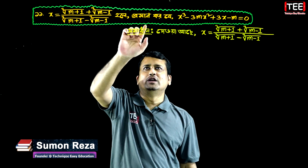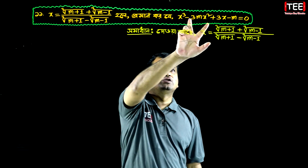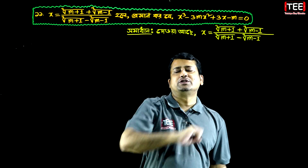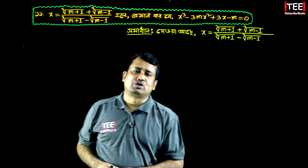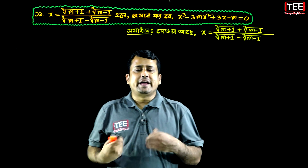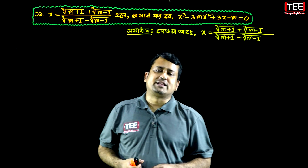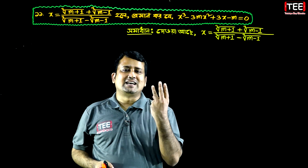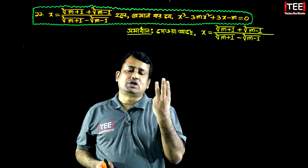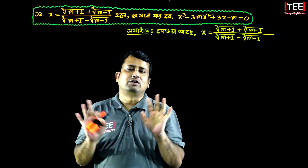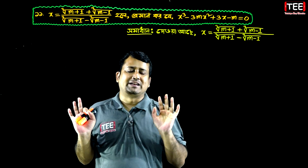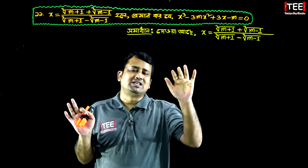If you have a best, you can put it on to a equal to zero. If you put it on to three steps, then you can get it on to three steps.